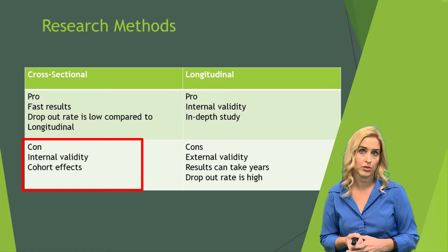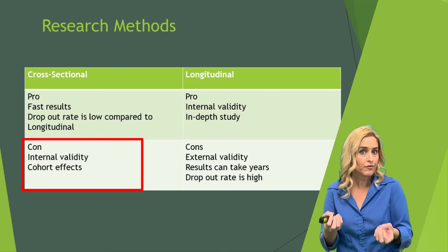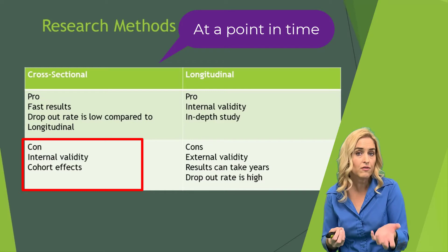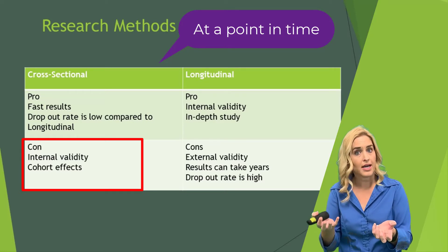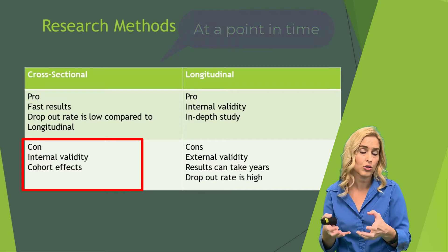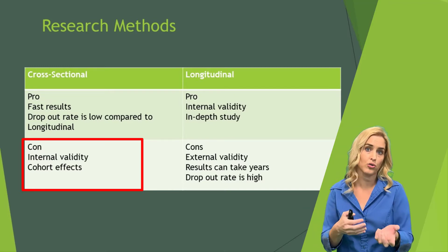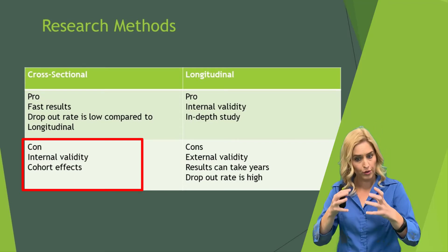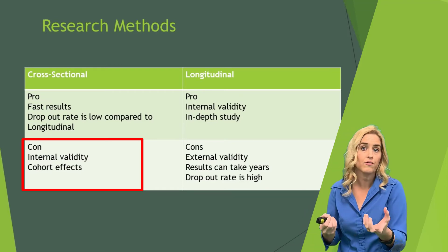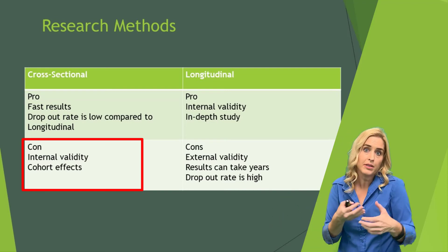There are also some cons to cross-sectional research. The internal validity is not as strong as with longitudinal research. What we're talking about with internal validity is that there's a difference between the groups we choose from our population. Maybe in our first grade group, there were some really advanced readers, and in our third grade group, they weren't as advanced as those first graders had started out. That could be causing some of the differences and affects internal validity. Also, there are cohort effects, which tend to affect cross-sectional research more than longitudinal. With cohort effects, we're talking about something that happened with a cohort of people going through time together that affects them — for example, if these first graders were exposed to a really advanced reading curriculum in kindergarten, that could change the trajectory of their reading and lead to cohort effects.